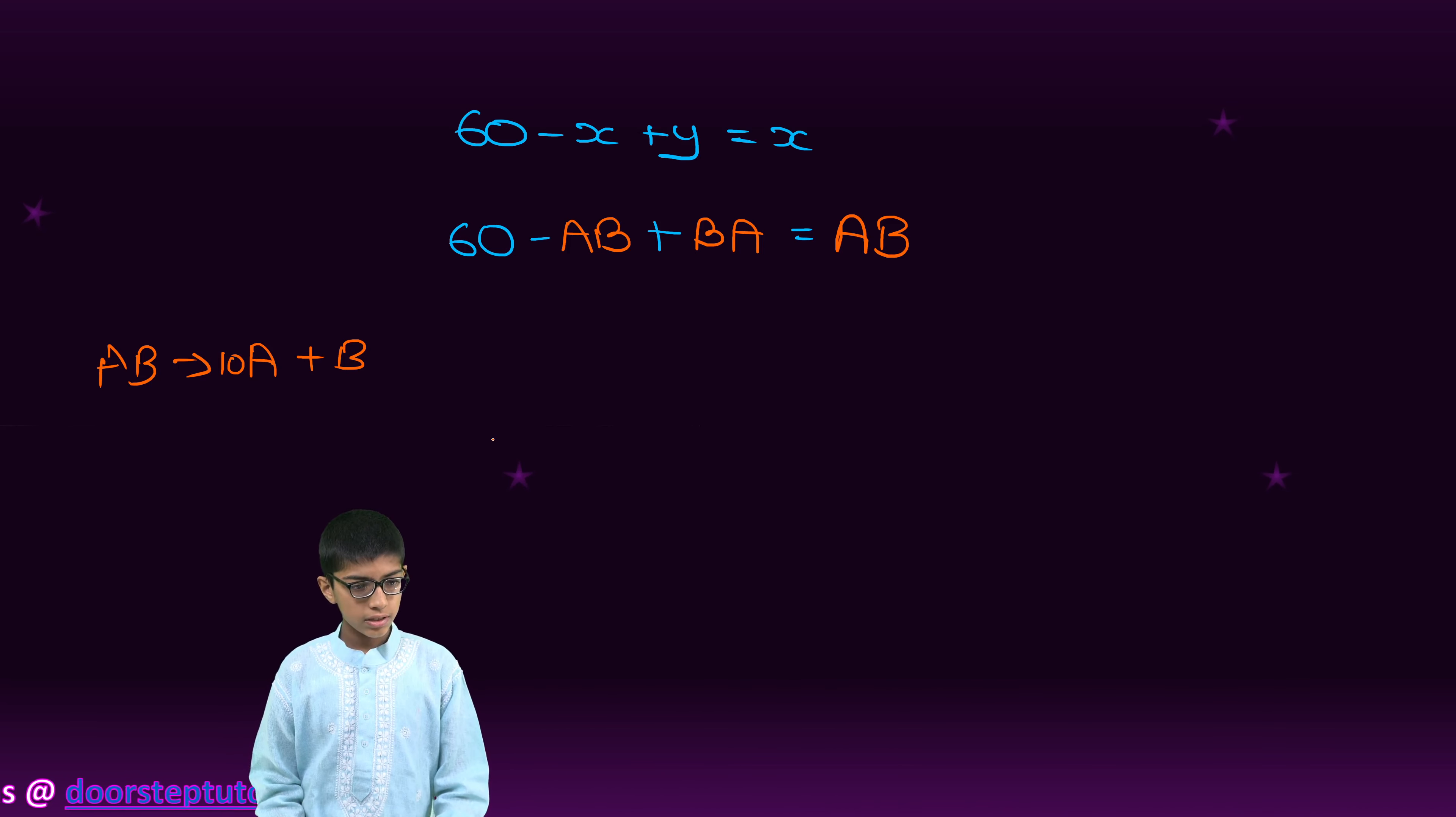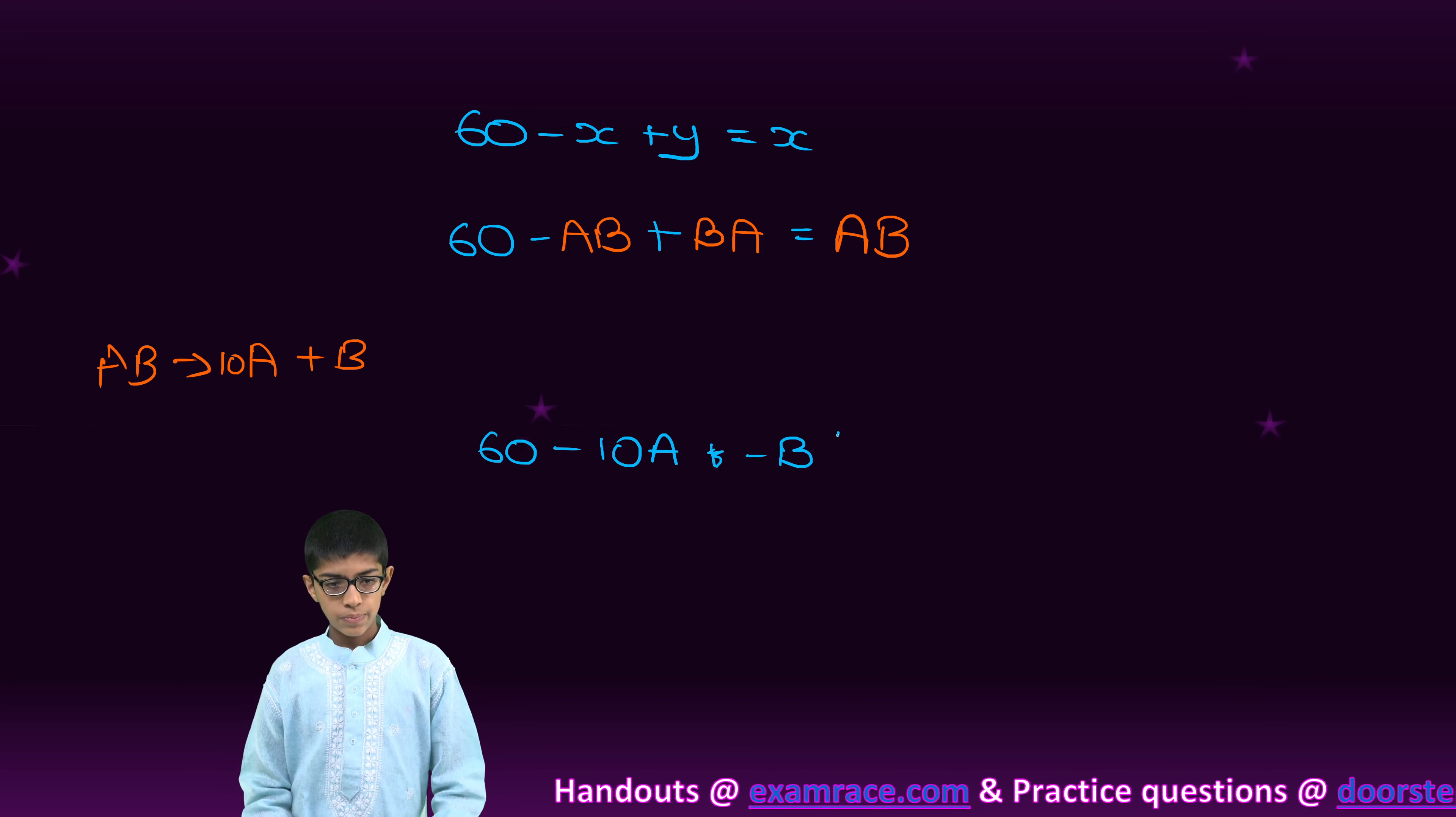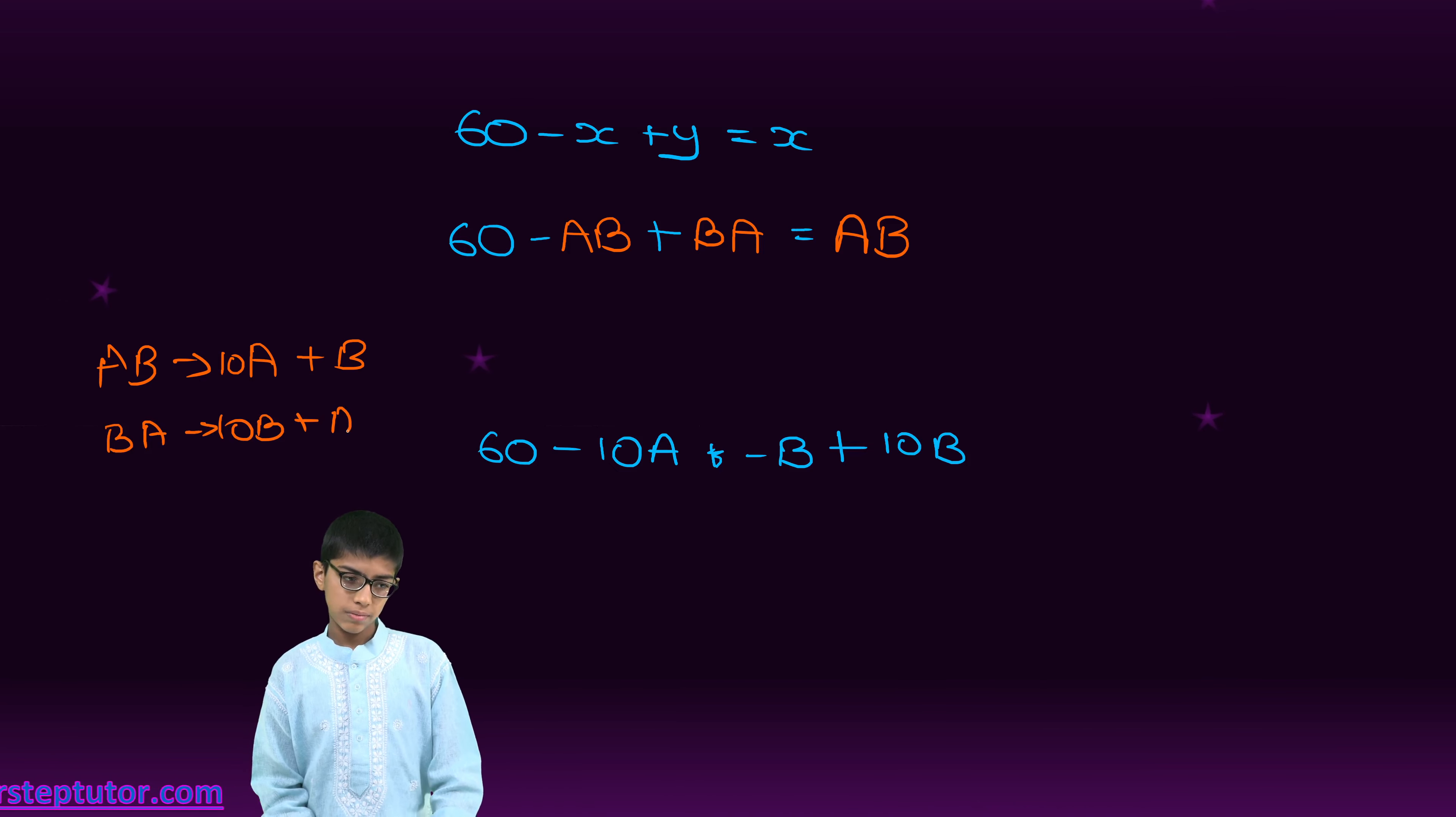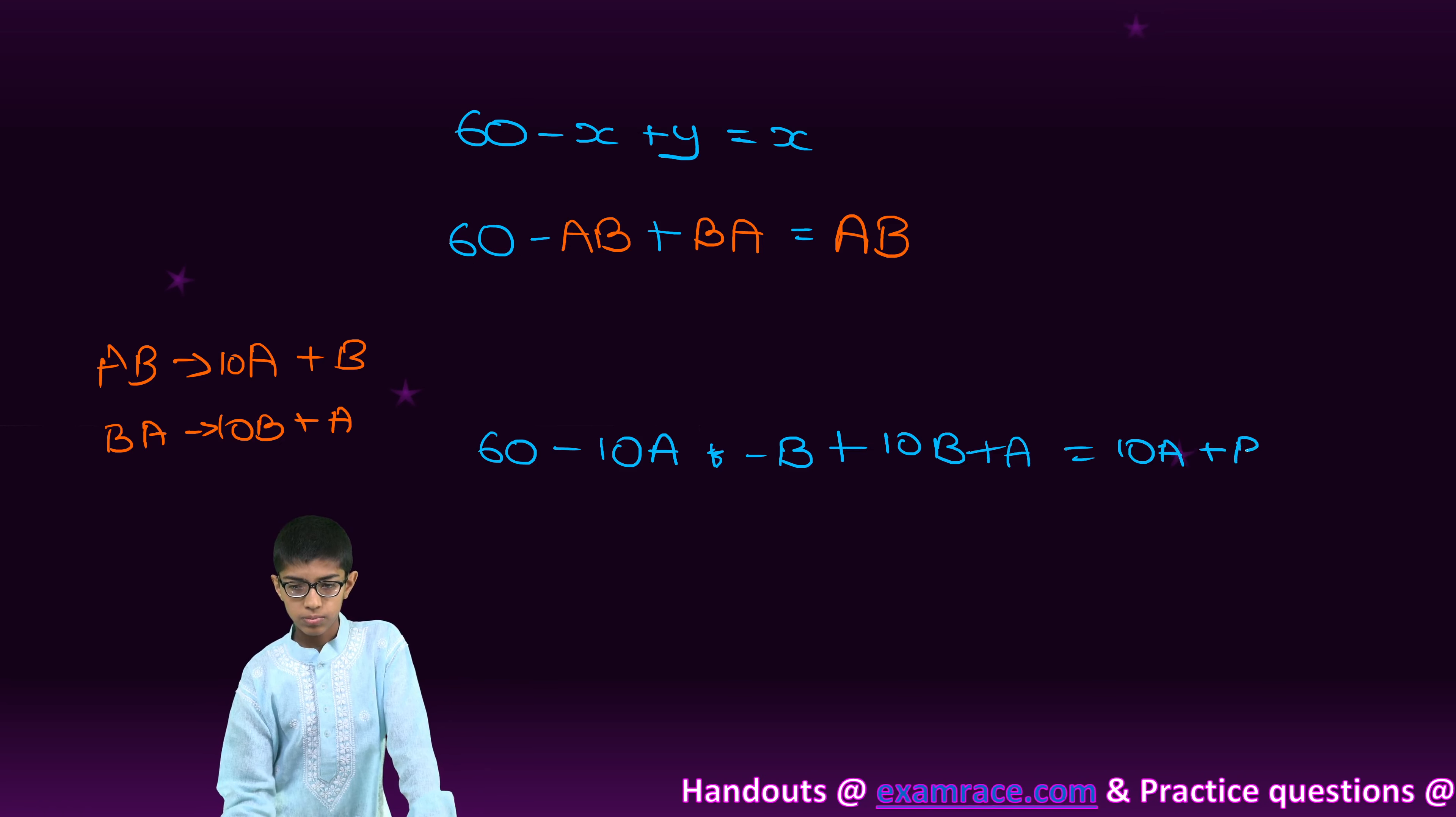So, we can write it as 60 minus 10A minus B. Again, plus 10B because here again, BA stands for 10B plus A. So, 10B plus A is equal to 10A plus B.